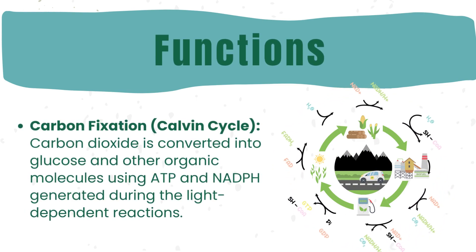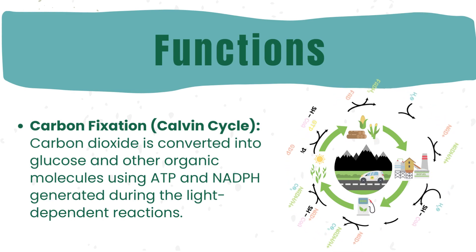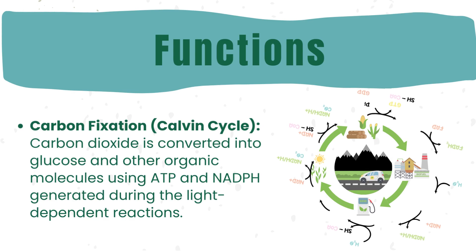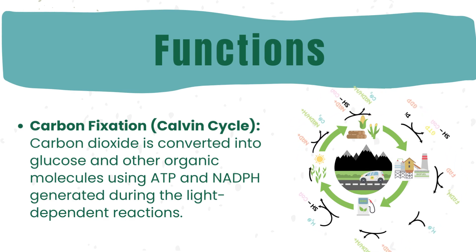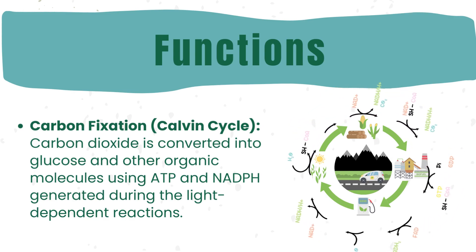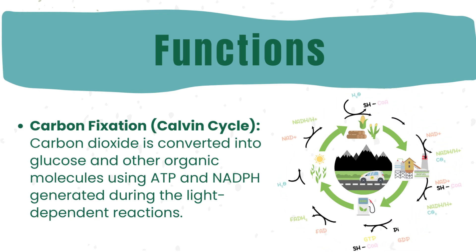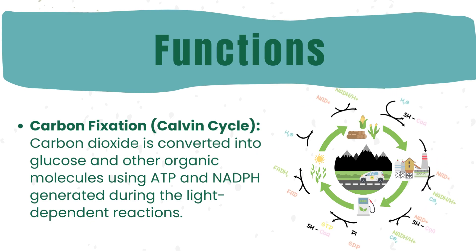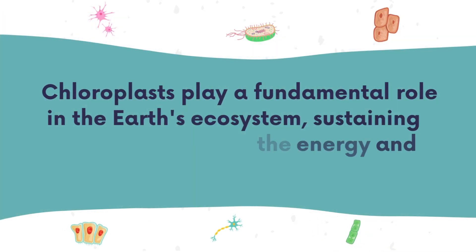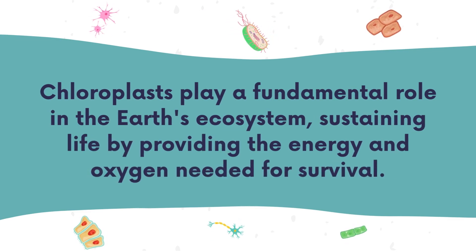The Calvin cycle, also called carbon fixation, is like a recipe for plants. They use carbon dioxide, a bit like a chef using ingredients. With the help of ATP and NADPH energy molecules they made earlier, they transform carbon dioxide into glucose and other vital stuff they need. It's like cooking up their own food in their plant kitchen.